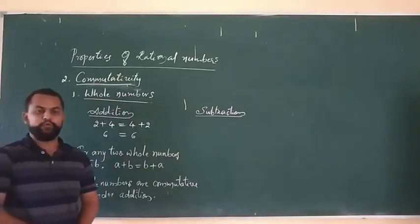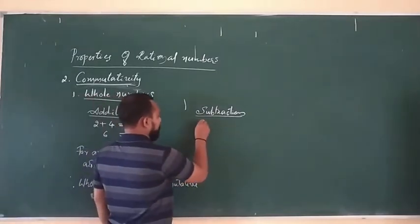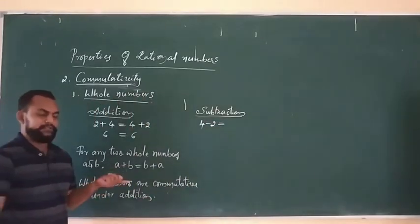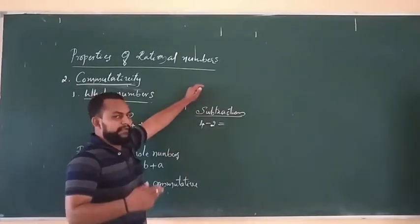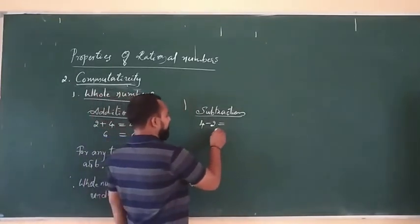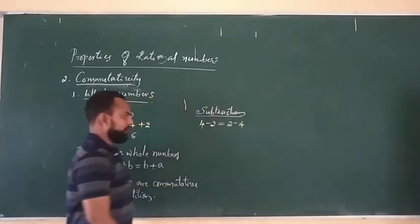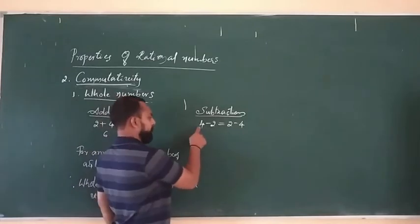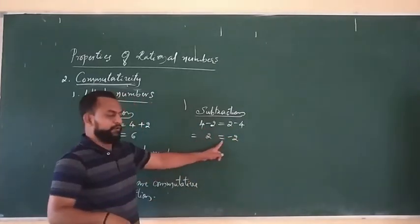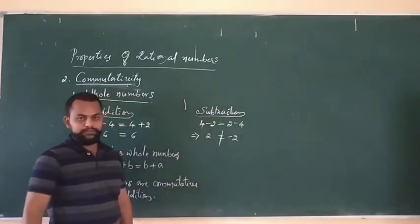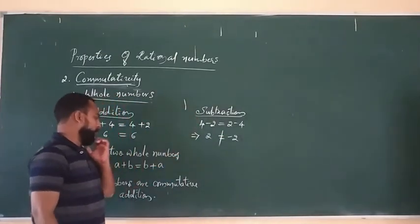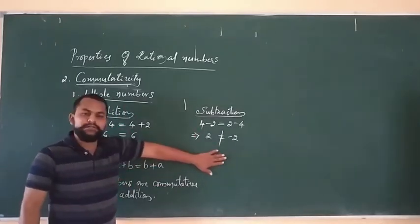The difference of two whole numbers: here 4 minus 2. Applying the commutative rule A minus B equals B minus A — 4 minus 2 equals 2 minus 4. So 4 minus 2 is 2, and 2 minus 4 is minus 2. Therefore 2 is not equal to minus 2. So the whole numbers are not satisfied under subtraction.